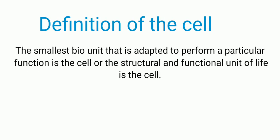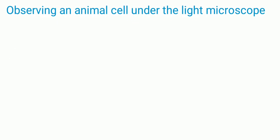Cells are of different shapes and sizes. We can define cells as the smallest bio unit adapted to perform a particular function, or as the structural and functional unit of life. These cells are microscopic in size, so we cannot see them with the naked eye — we need microscopes to observe the cells.